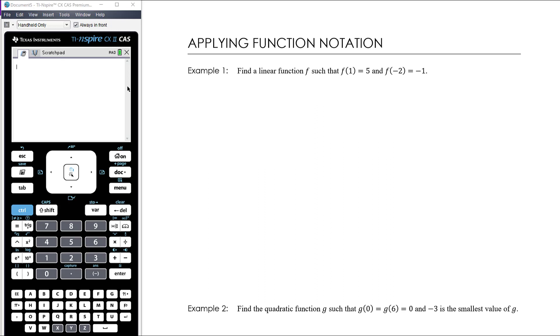The first example asks us to find a linear function called f such that f(1) equals 5 and f(-2) equals -1. So a couple of things to think about here. We have a linear function and it's called f.